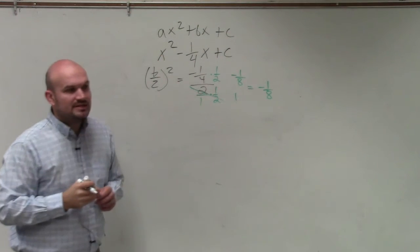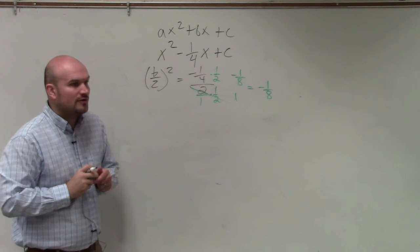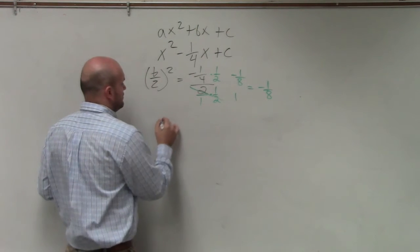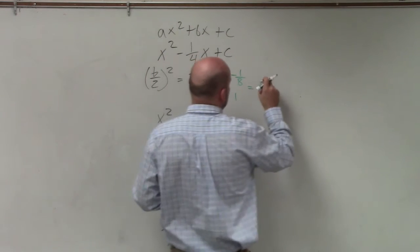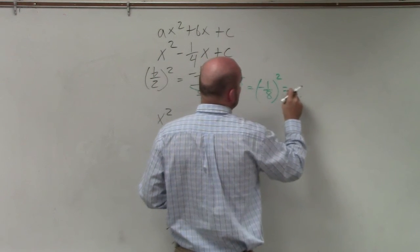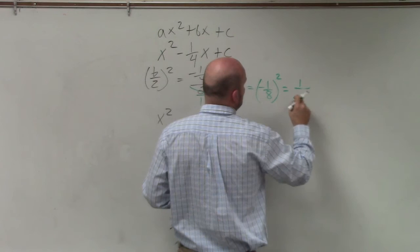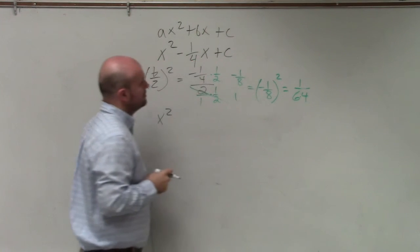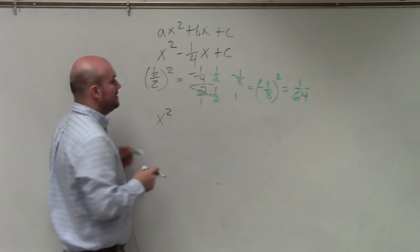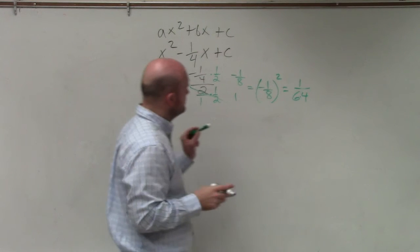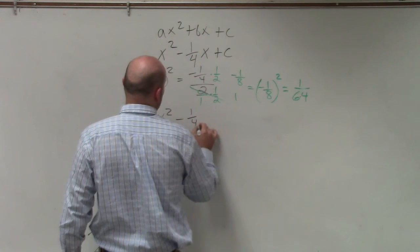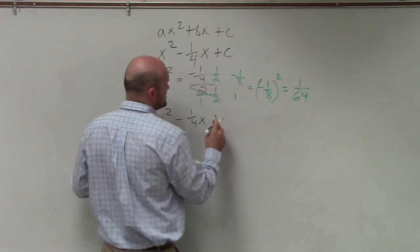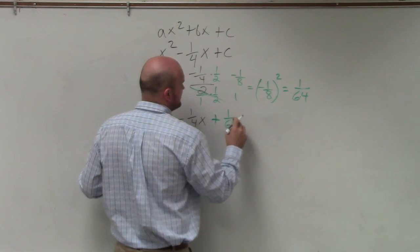So the value c that completes the square is negative one over eight. Oh, I didn't square it yet. Sorry, forgot about that. Then I have to square that number. So it's going to be a positive one over 64.